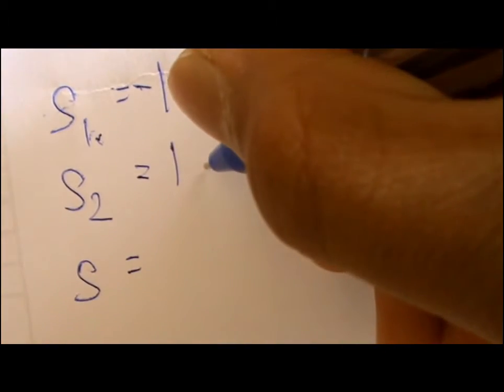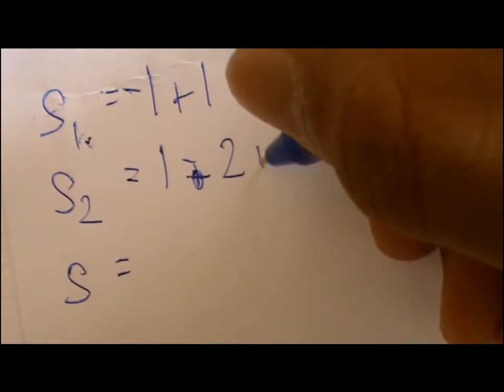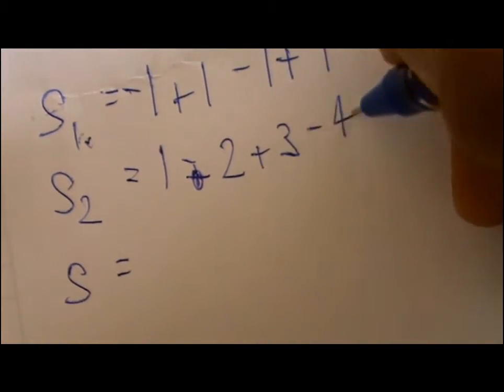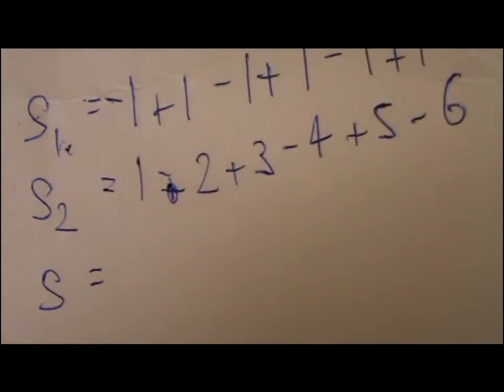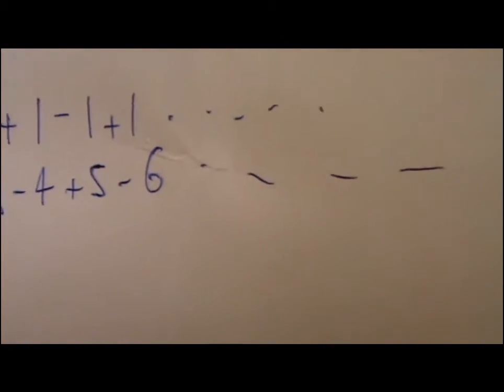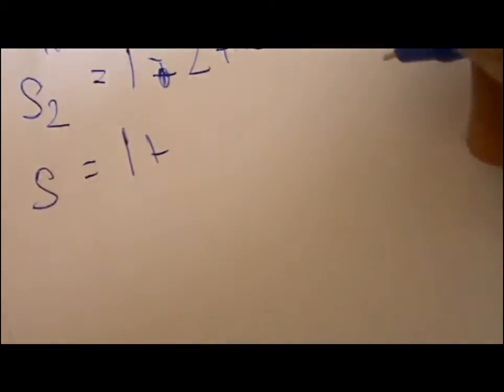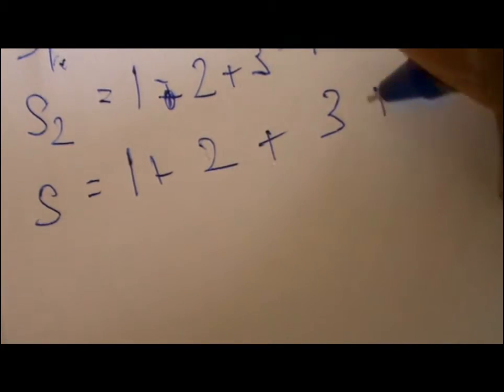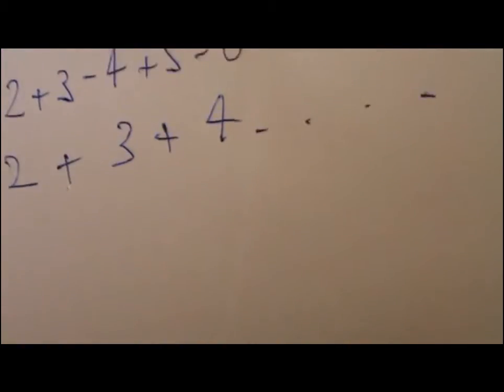And S2 is going to be one minus two plus three minus four plus five minus six and so on. So now, let's find out the value of these two, and then we go to the ultimate sum S, which is the sum of all the numbers which are positive.